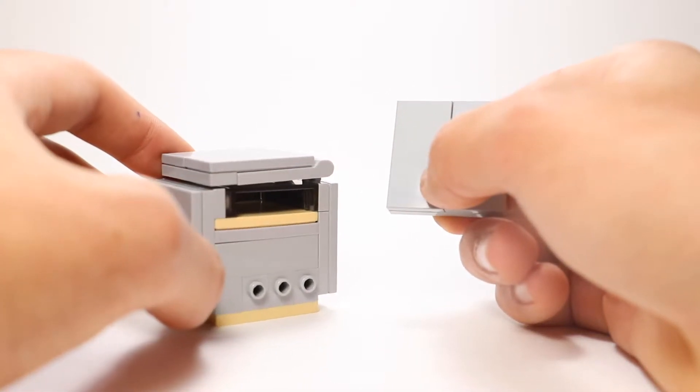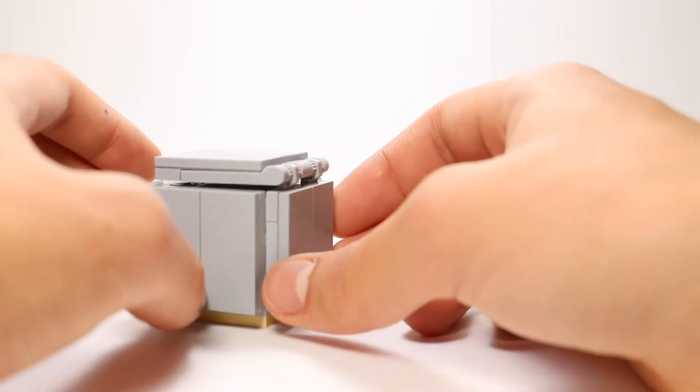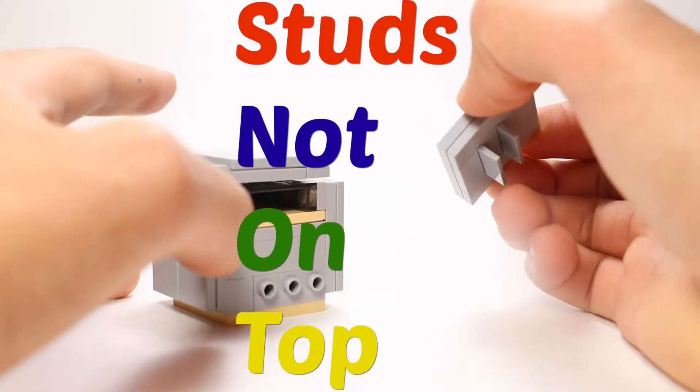On the siding, I used a basic technique. I used a snot brick technique to be most specific. It's super useful and no, I'm not talking about the little wet soggy boogers that come out of your nose. I'm talking about studs not on top.